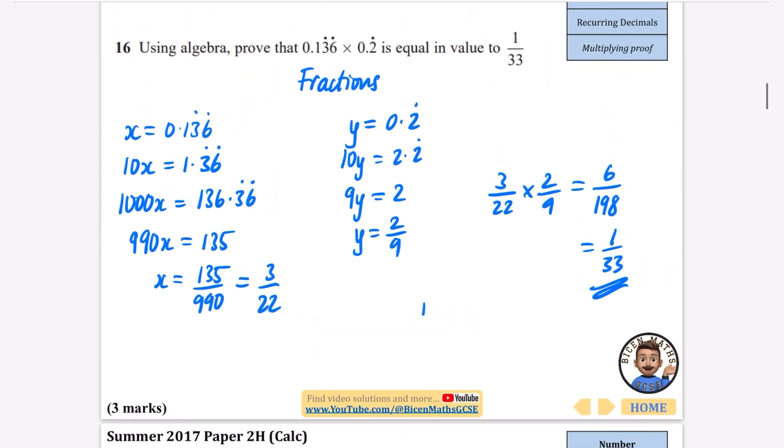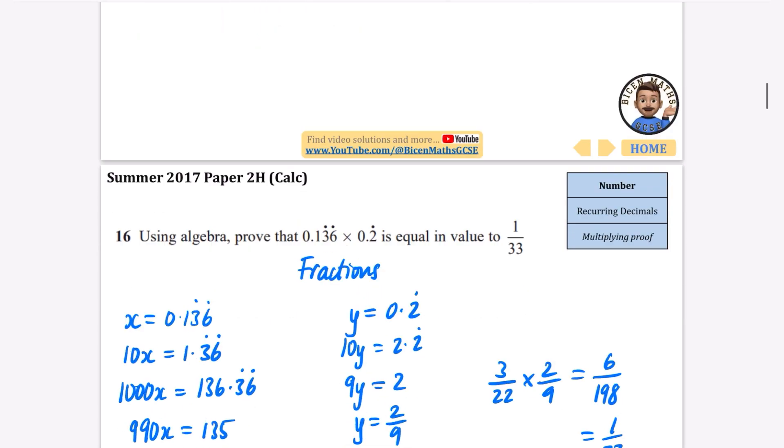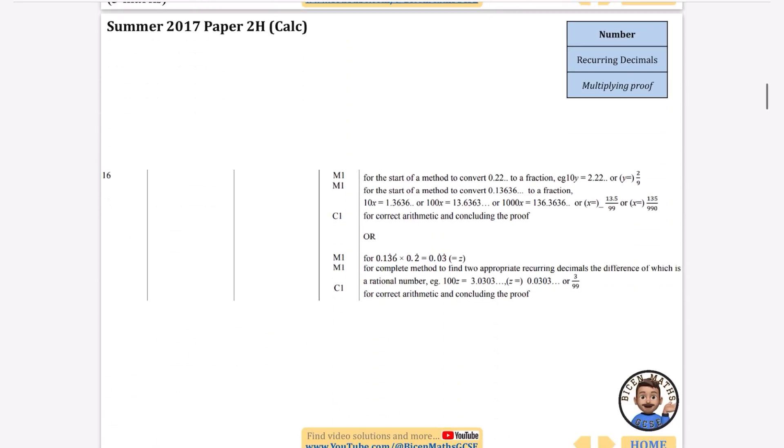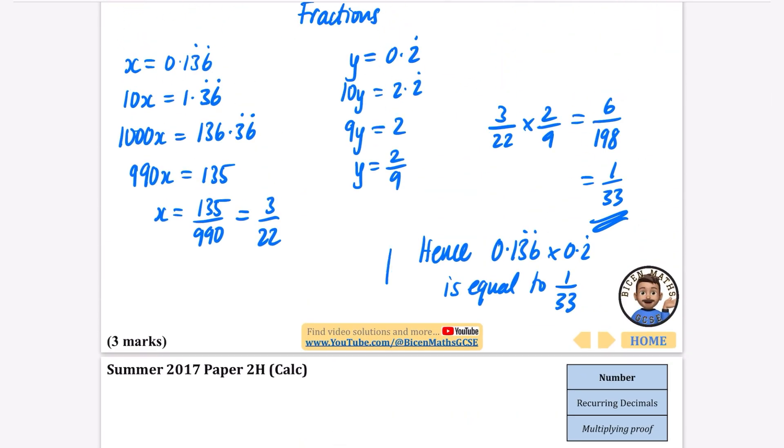6 over 198, if I simplify that, I'll get 1 over 33. I can just write down underneath it that that is 1 over 33. I guess we should say at the end, because it does want us to say in a proof, hence 0.136 recurring multiplied by 0.2 recurring is equal to 1 over 33. I don't think the other ones needed a concluding statement. The reason I did that is because it said for a correct arithmetic and concluding the proof, so I think we need to make sure we have that little sentence.